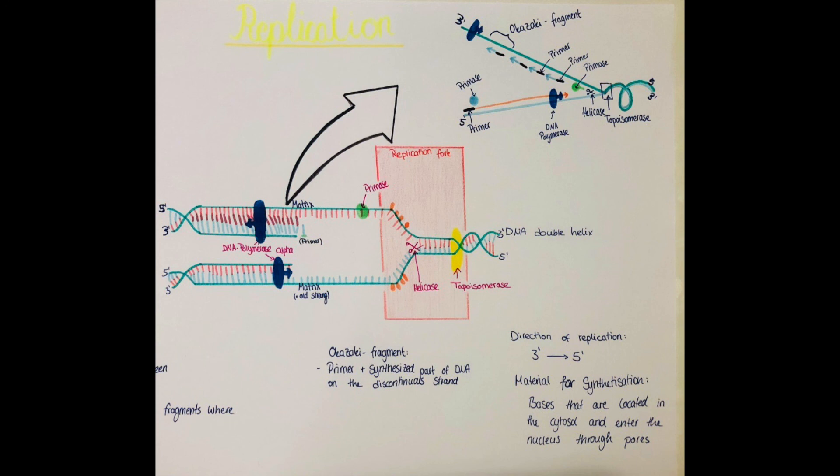And then these primers have to be removed somewhere, and this is done by the RNaseH. I wrote the name on the left side of the poster. And this removes the one primer on the 5' to 3' direction and all the primers which are part of the Okazaki fragments on the discontinuous strand.